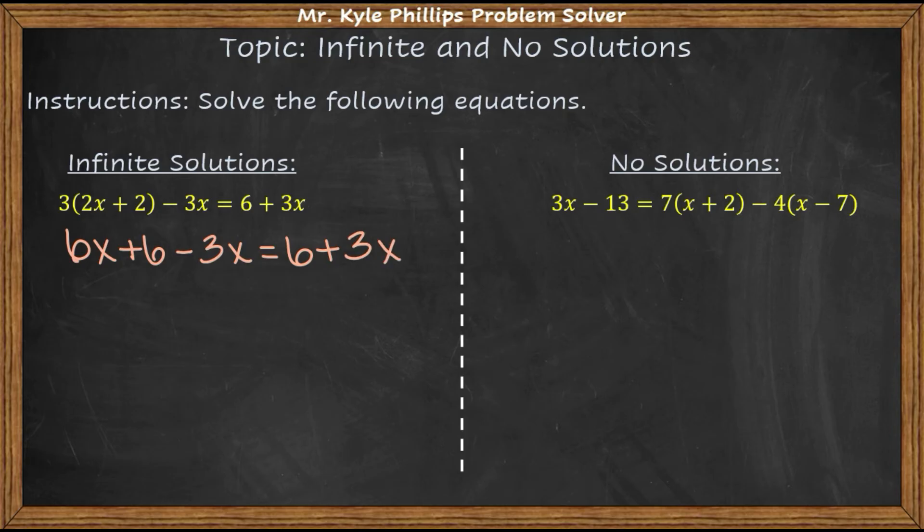So we need to combine like terms. So I'm going to combine this 6x with this negative 3x. So here I have 3x plus 6 equals 6 plus 3x. Now here you can see how each side is the exact same. 3x plus 6 equals 6 plus 3x. These are identical.